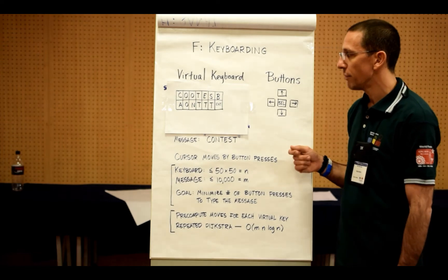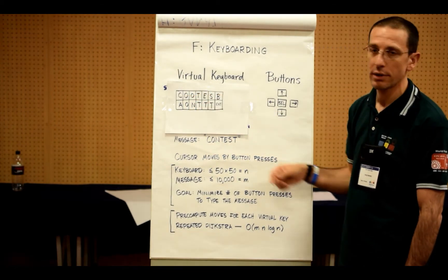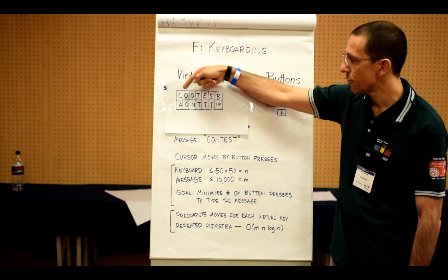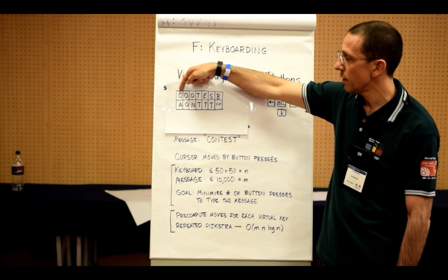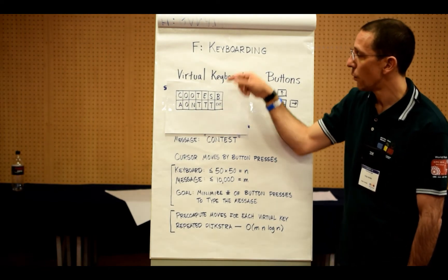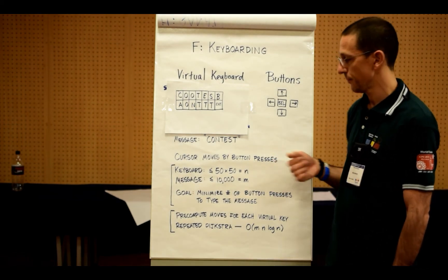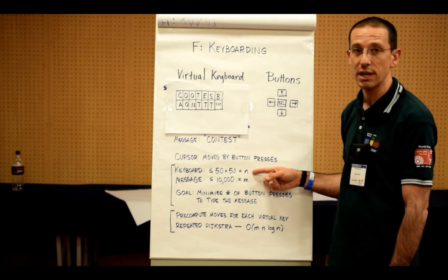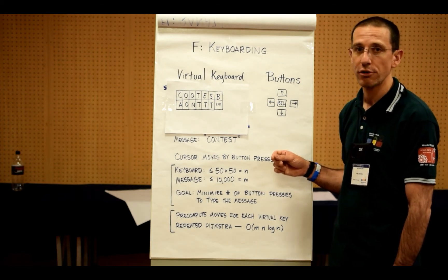We can solve this problem by pre-computing first all the moves that you can make for each position on the board — up, down, left, and right. Then we can run a repeated Dijkstra's algorithm or similar shortest path algorithm to get from the beginning position and beginning state to the enter state, which you always must type at the end, repeatedly running Dijkstra's algorithm for the current set of positions that you can get to with their current distances. We expect that this problem can be solved in M — the message length — times N log N — the size of the keyboard. Some teams have also solved this using a more straightforward breadth-first search approach with a larger graph. Either way works.